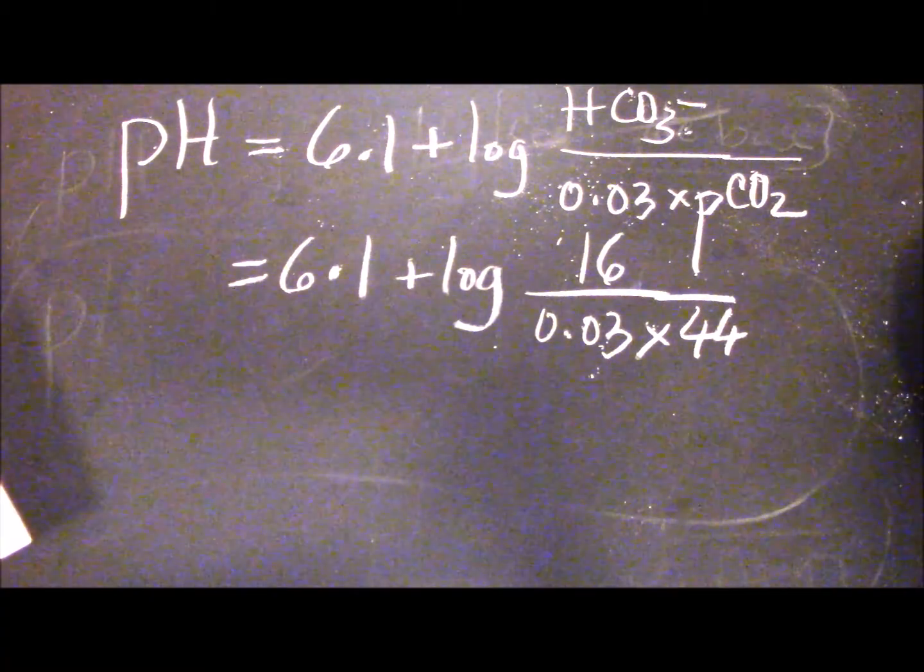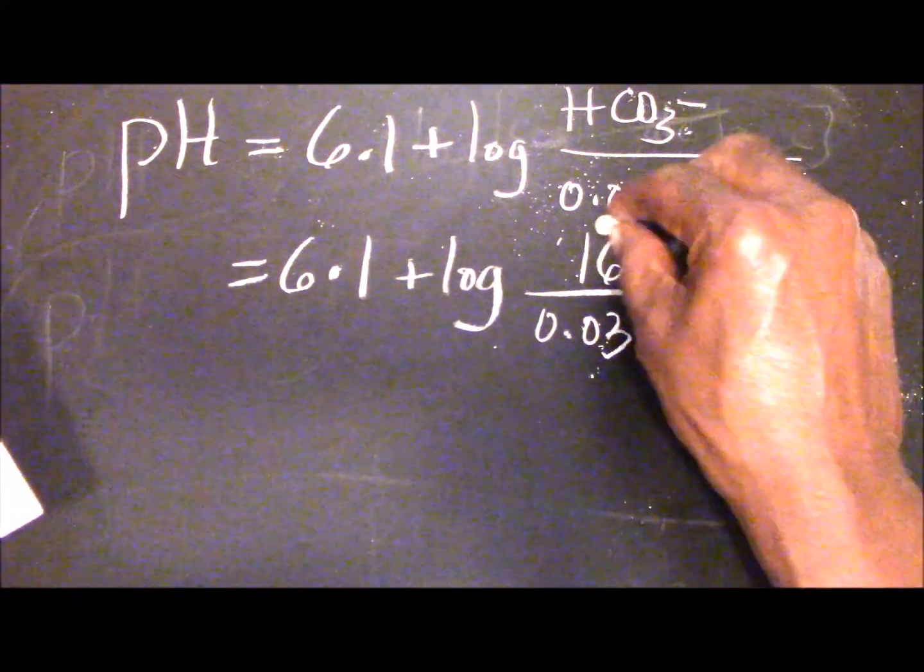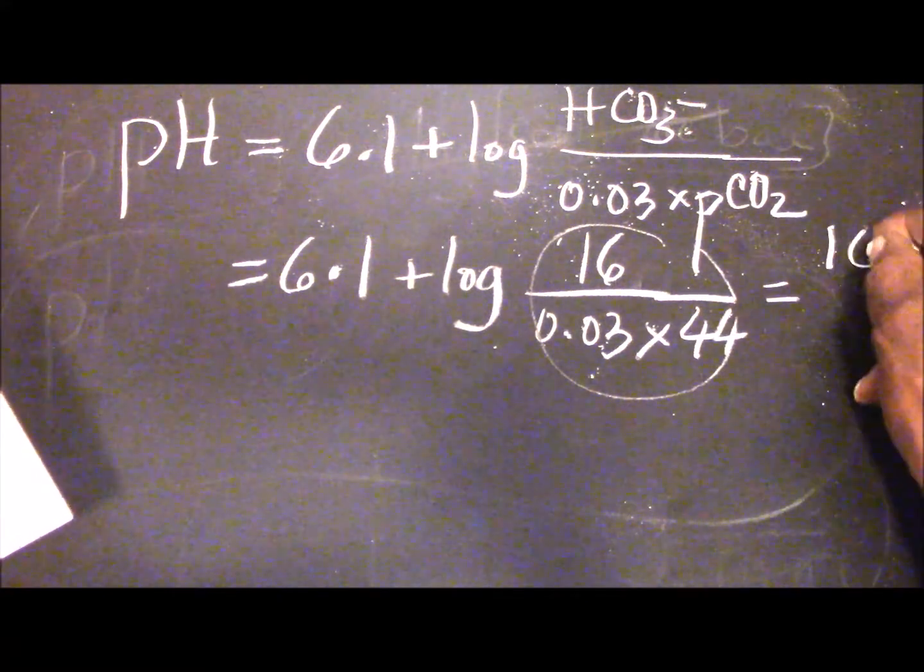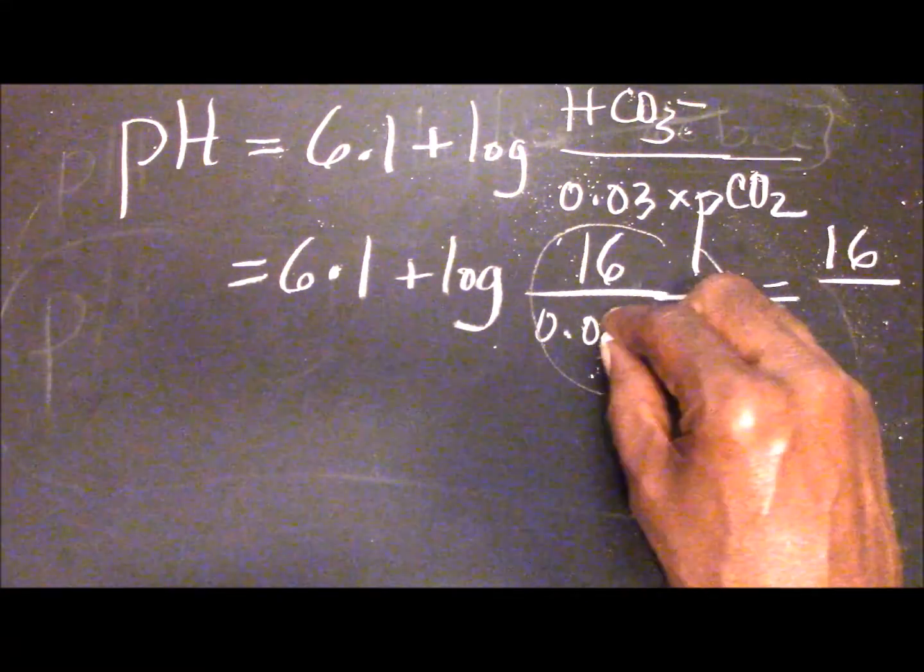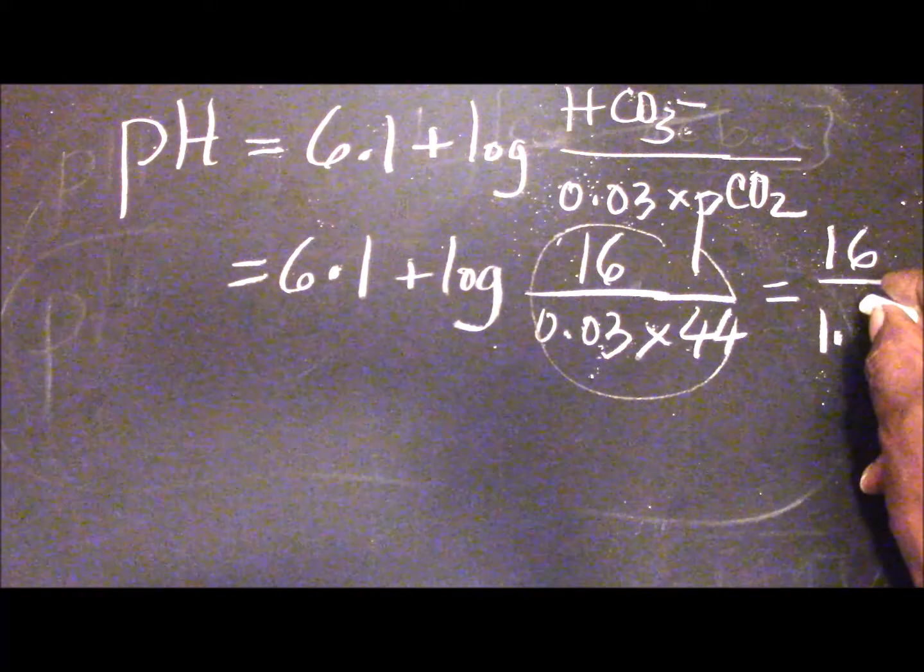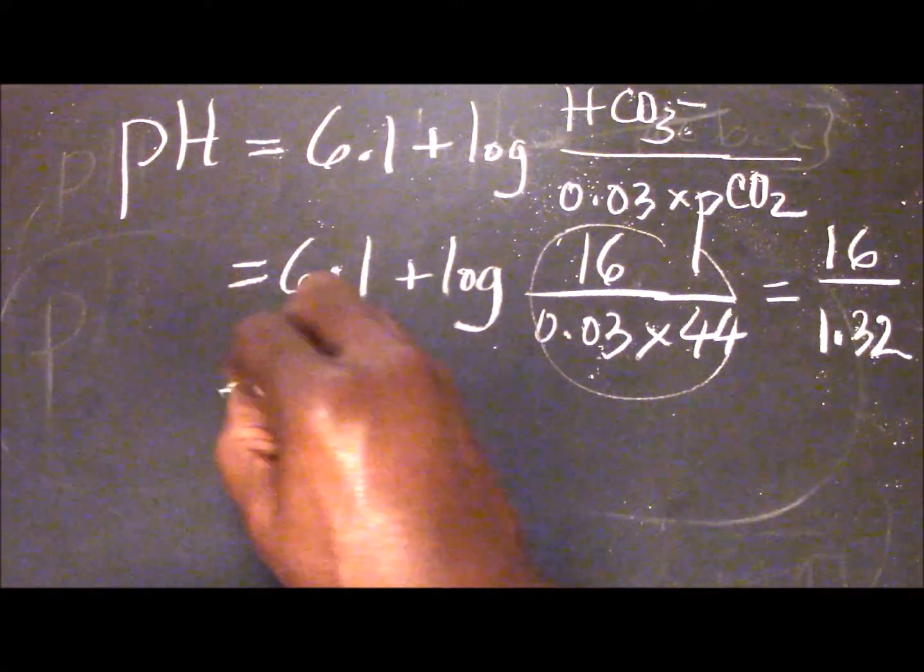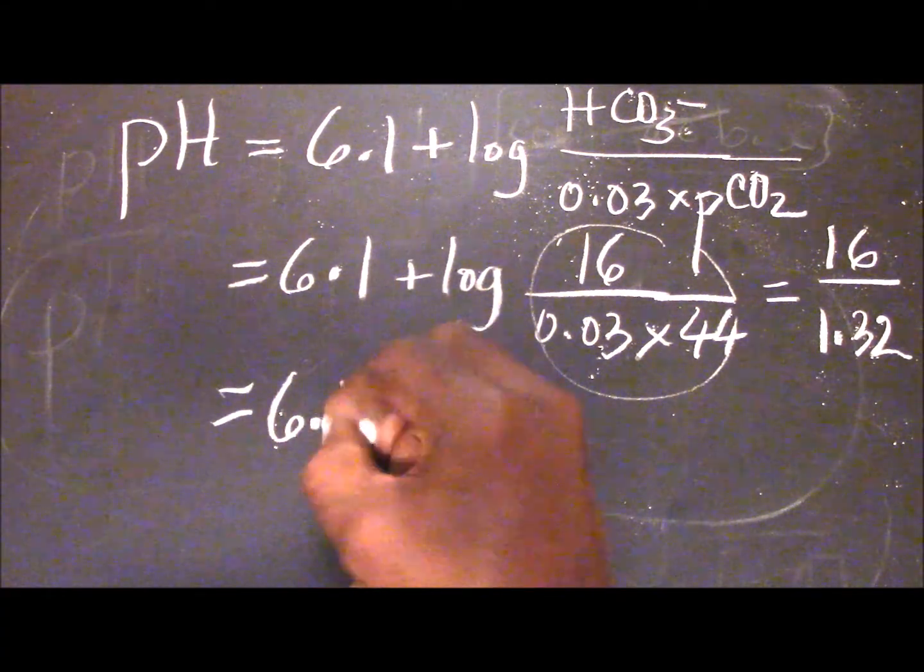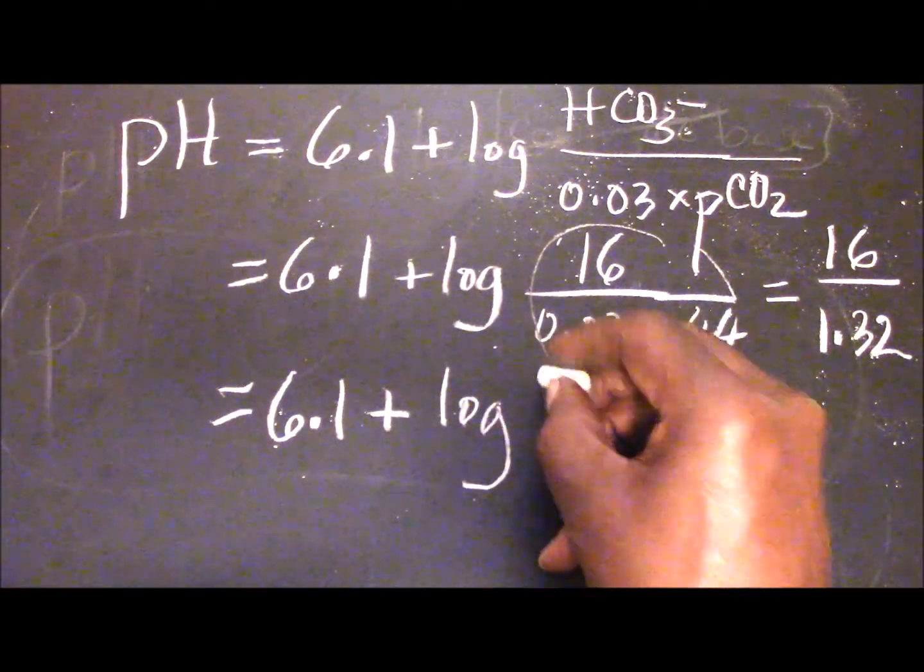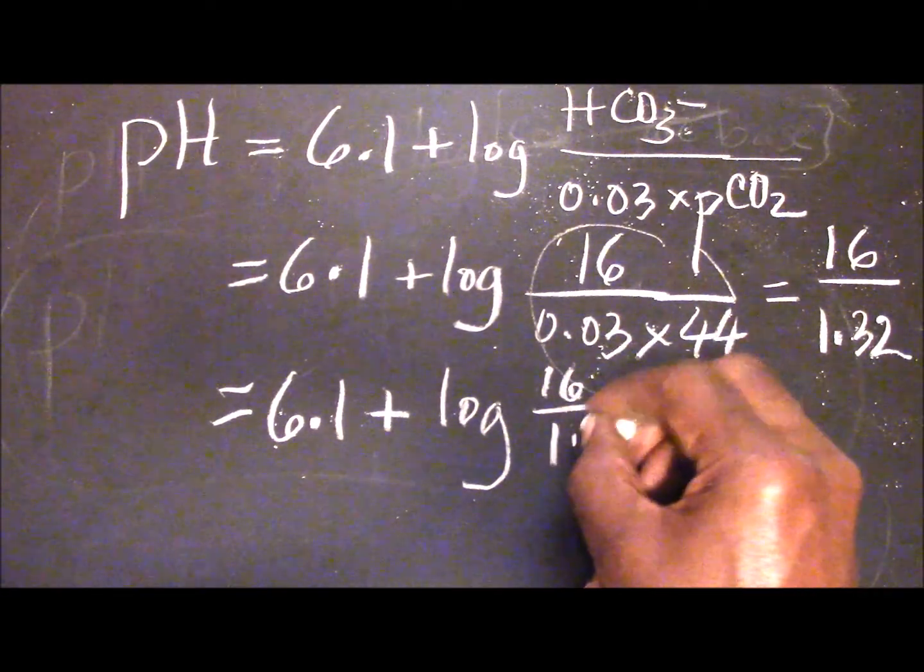Now when you multiply, I would like to take it step by step so I don't have to do it a second time. So you can equally say that the whole of this thing here is equivalent to 16 over - you do this multiplication first, carefully on your calculator. What you would get is 1.32. So the equation is looking a little better now. You have 6.1 here, plus the logarithm of 16 divided by 1.32.